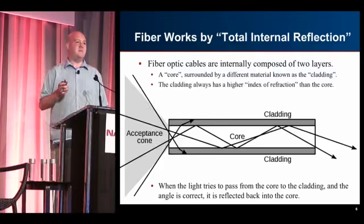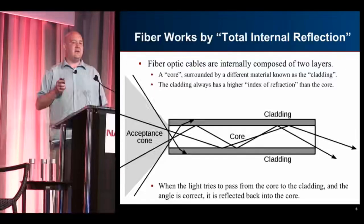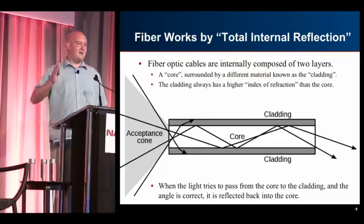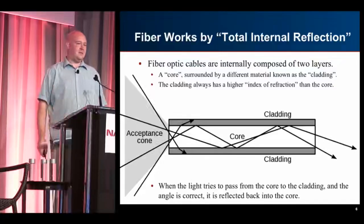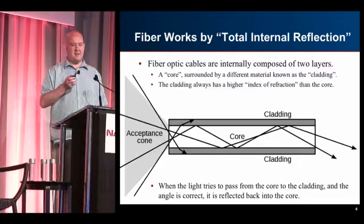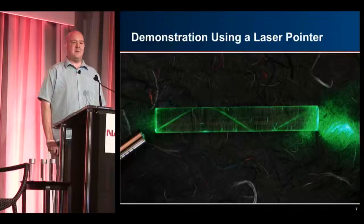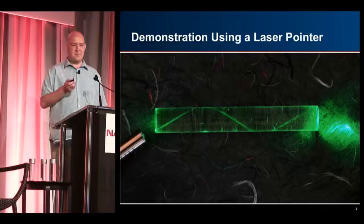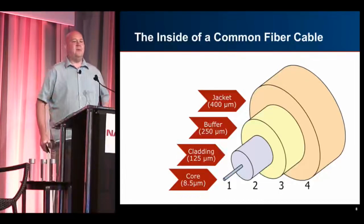The way this works is the fiber is composed of two different layers: a core and a cladding. The cladding has a higher index of refraction than the core, which forces the light to be constantly bounced back into the core and continue to propagate. As long as the light comes in at a certain angle called the acceptance cone, you get total internal reflection all the way down to the opposite end. There's a cool demonstration on Wikipedia using a piece of acrylic and a laser pointer where you can see this in action.